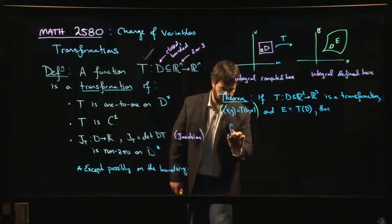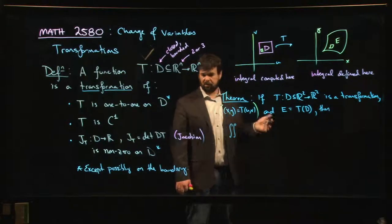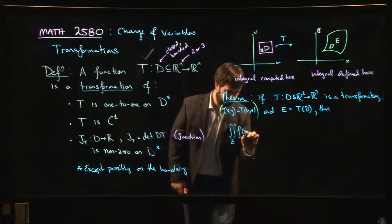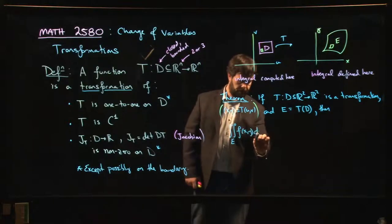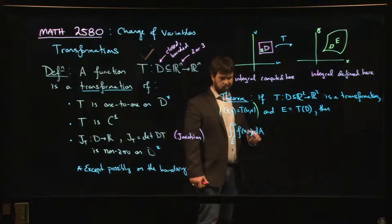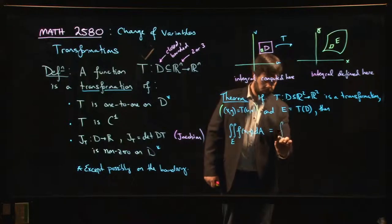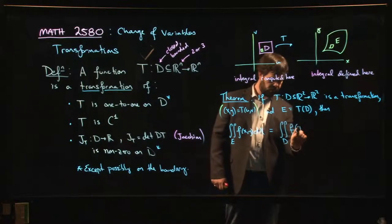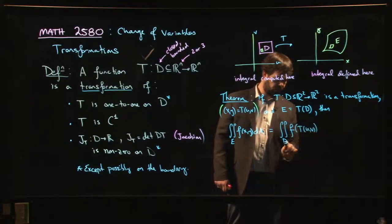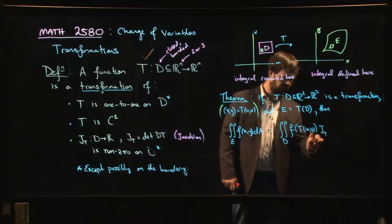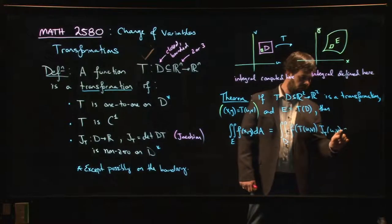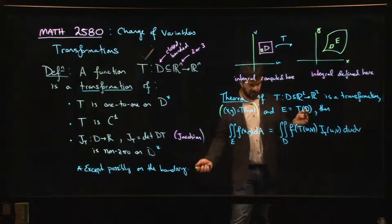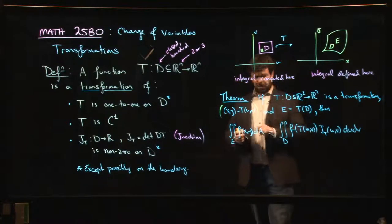With this setup, and, again, with the usual kind of assumptions on continuity of the function you want to integrate and things like that, the integral over E of F of xy dA, is equal to the integral over D of F of T of uv times the Jacobian of T, as a function of u and v, and then integrate it with respect to u and v, and whichever order happens to be convenient.